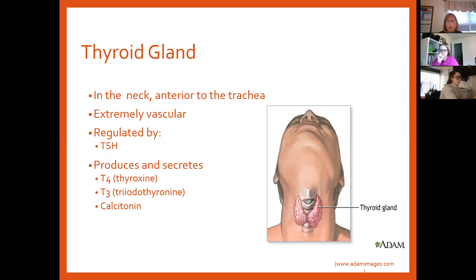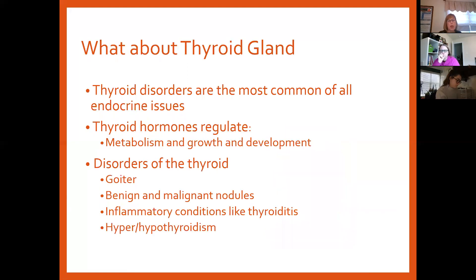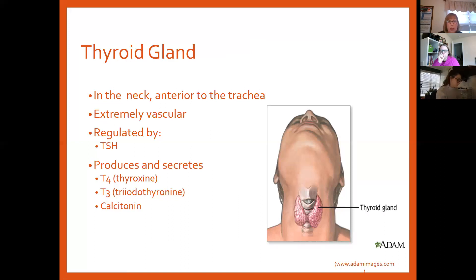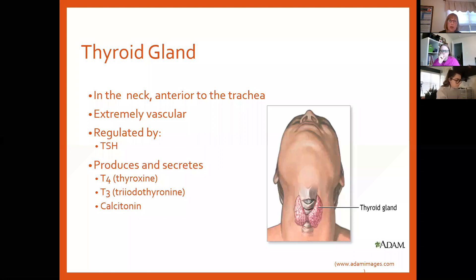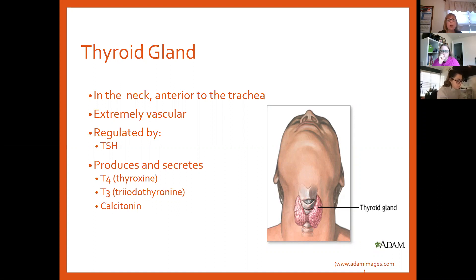It's regulated by thyroid stimulating hormone, which comes from your anterior pituitary, and it produces and secretes three things: thyroxine (T4), triiodothyronine (T3), and calcitonin. T4 is much more abundant in the body than T3, but T3 is more metabolically active. The thing about T4 is there's more of it, and in your peripheral circulation your body can convert T4 to T3 if you need it — so we always look to T4 to make sure there's enough. Calcitonin is released to decrease calcium levels.